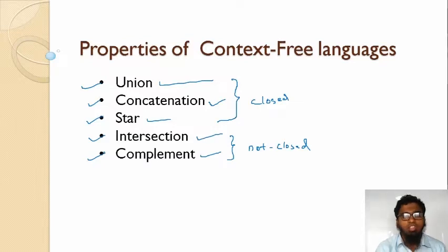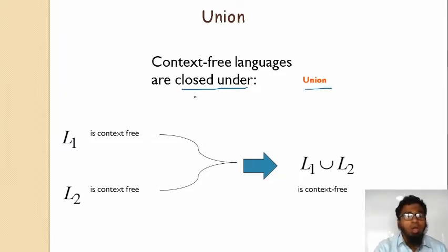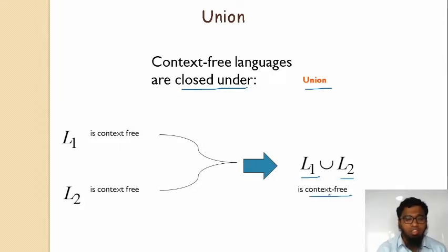The first property is union. Context-free languages are closed under union. Here L1 is one language and L2 is another language. L1 union L2 means we combine everything present in L1 and L2 together, and the result is also a context-free language.